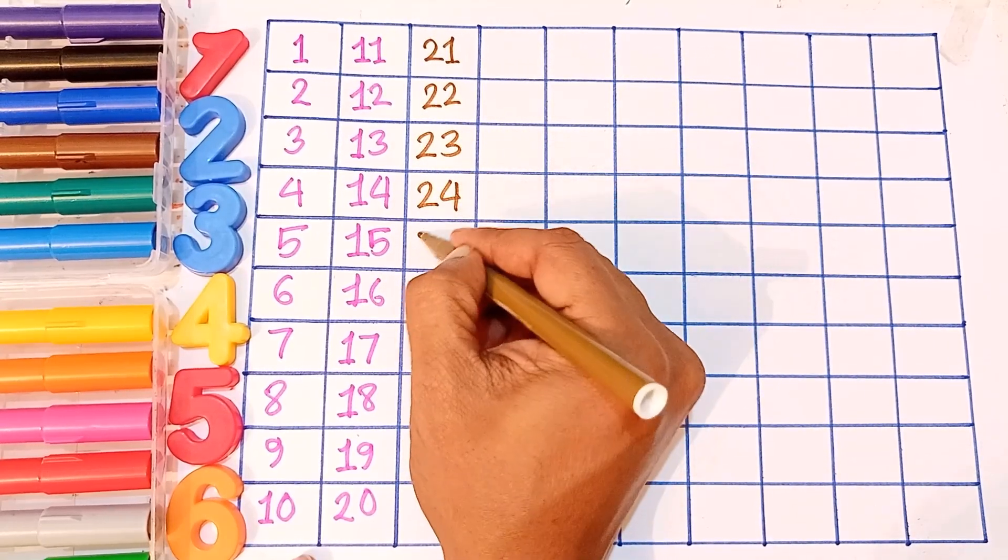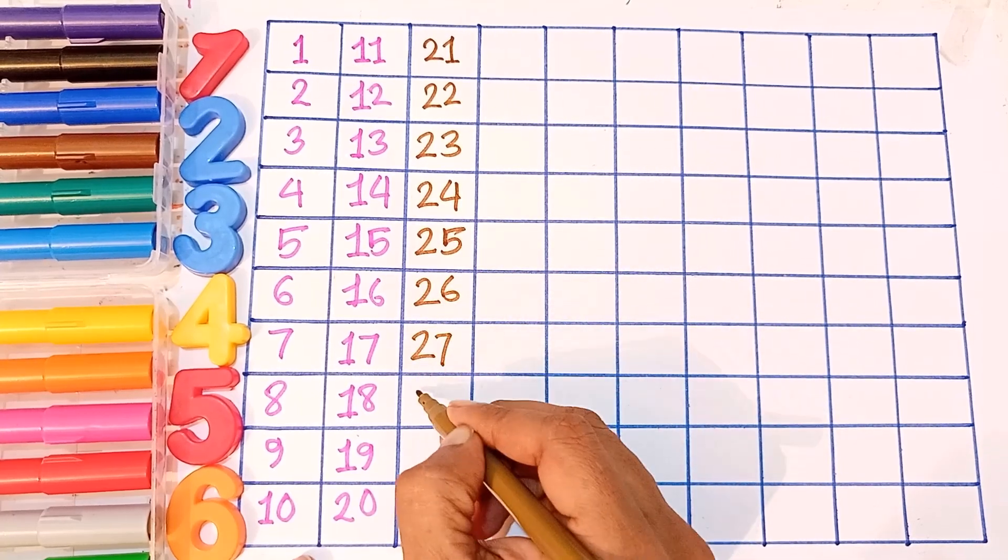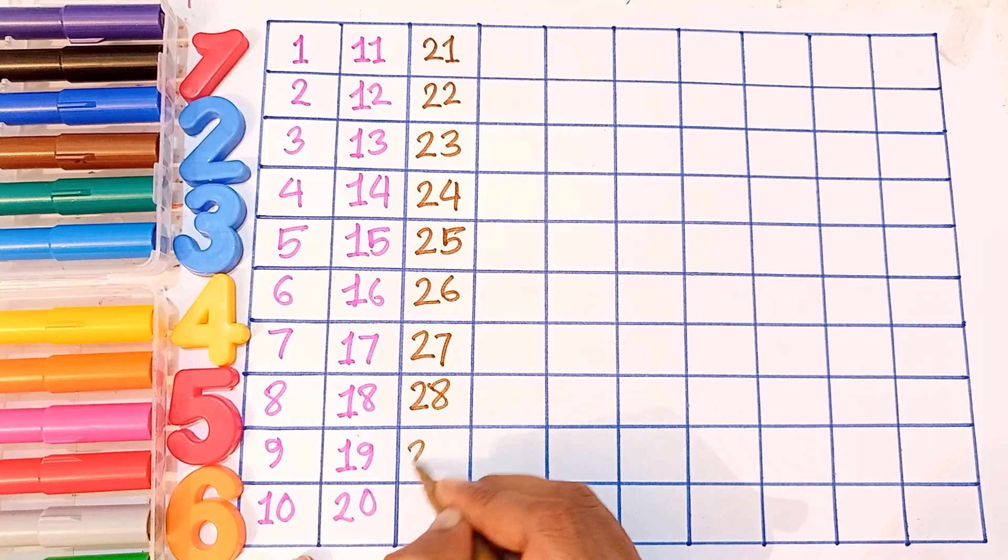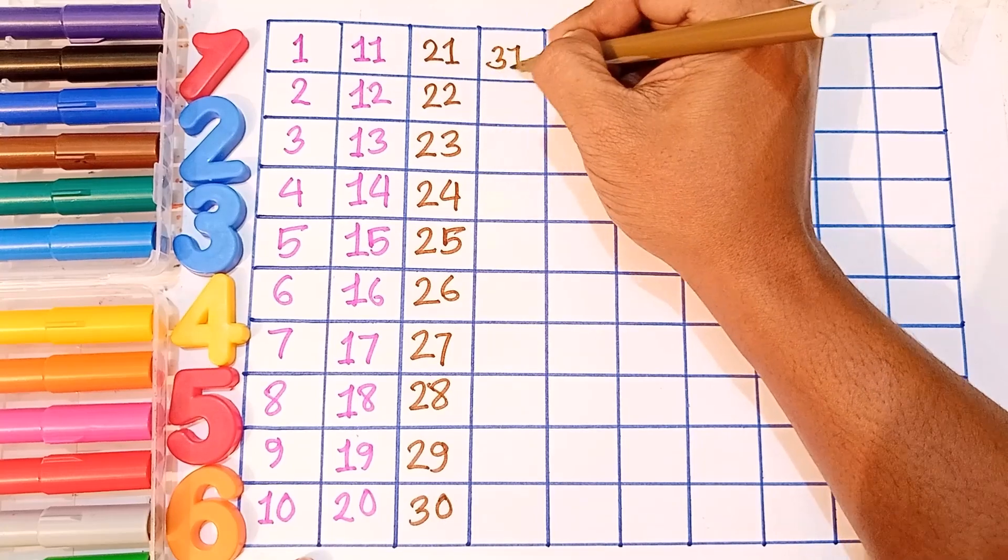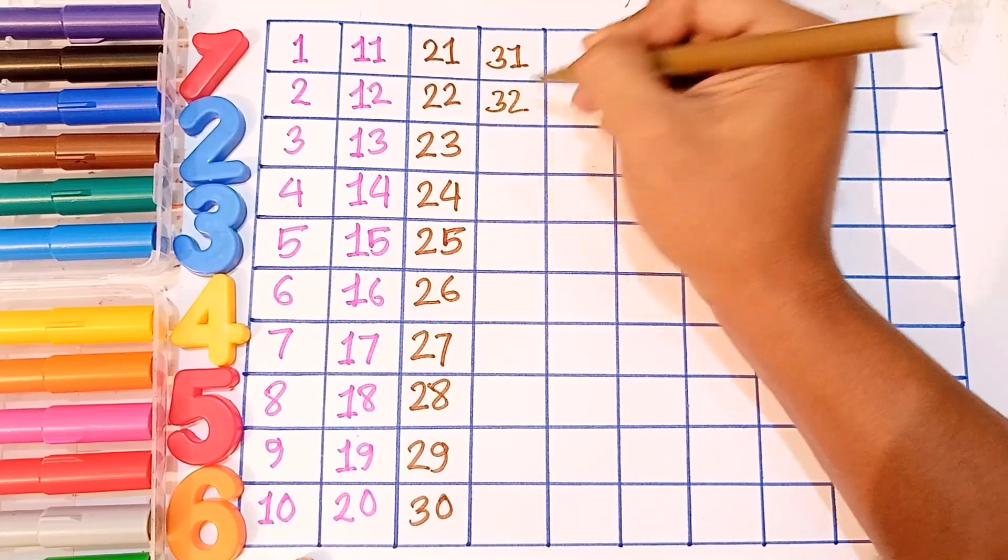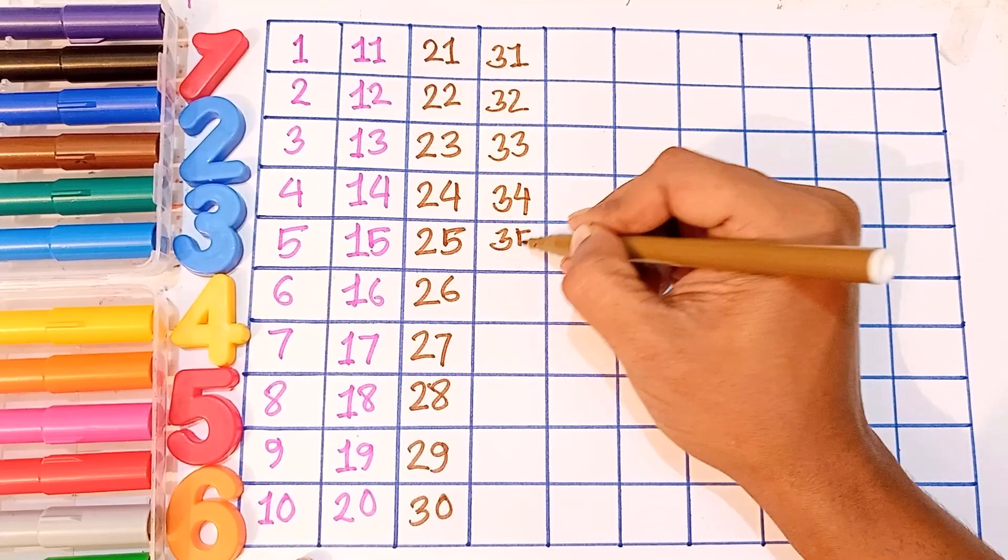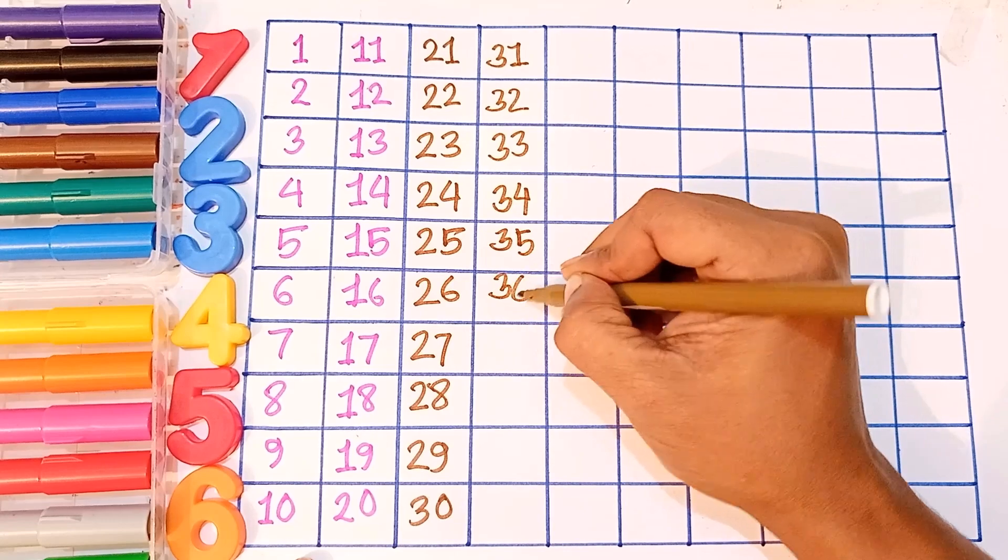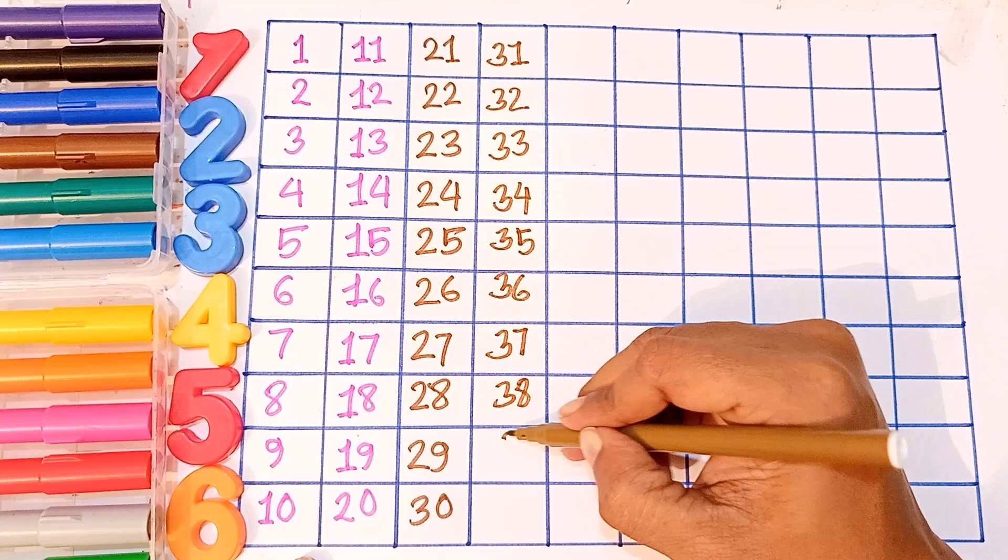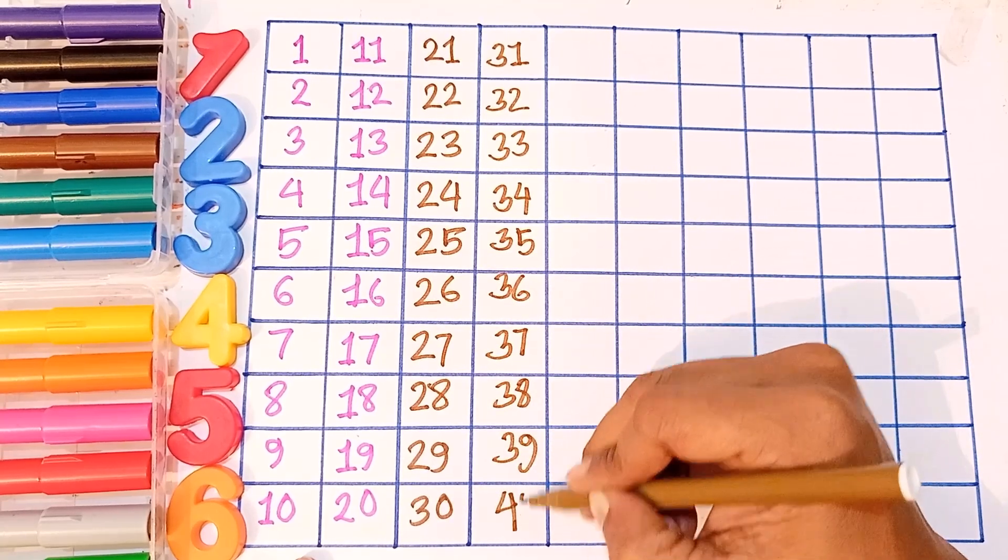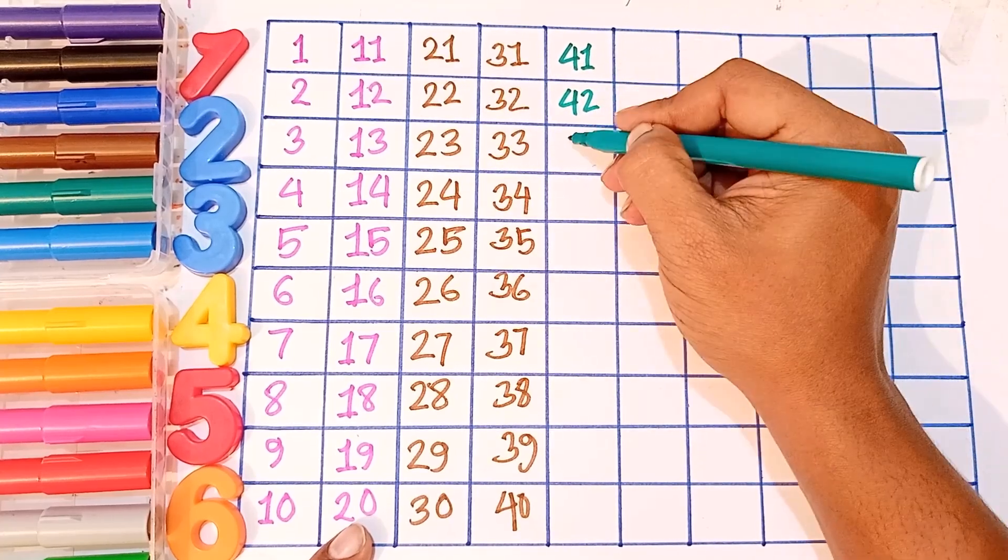Twenty-four, twenty-five, twenty-six, twenty-seven, twenty-eight, twenty-nine, thirty. Thirty-one, thirty-two, thirty-three, thirty-four, thirty-five, thirty-six, thirty-seven, thirty-eight, thirty-nine, forty, forty-one, forty-two.